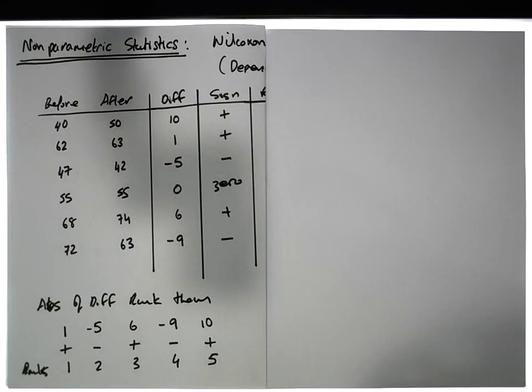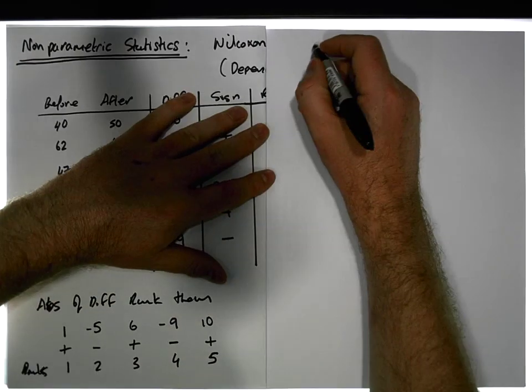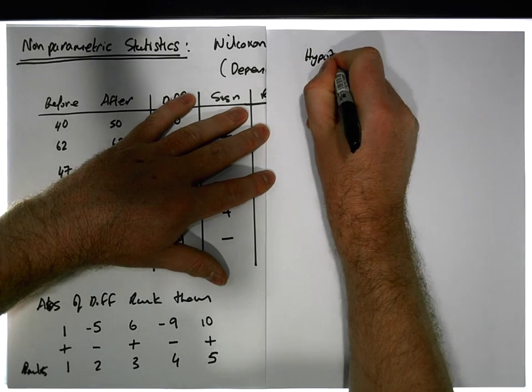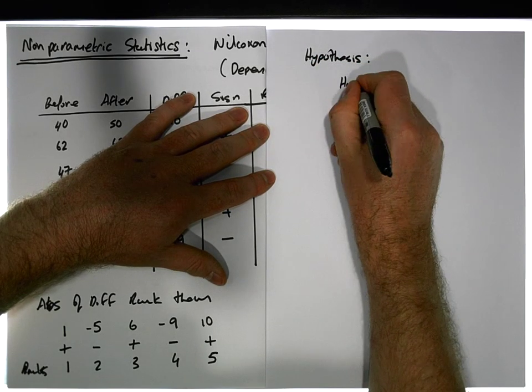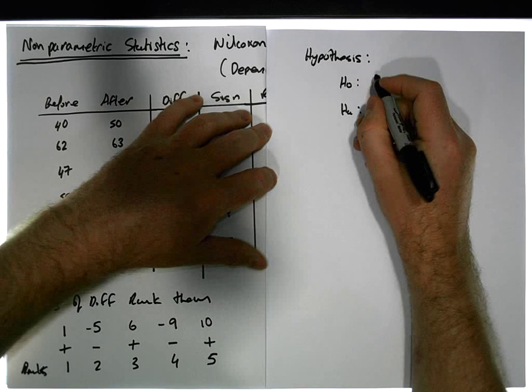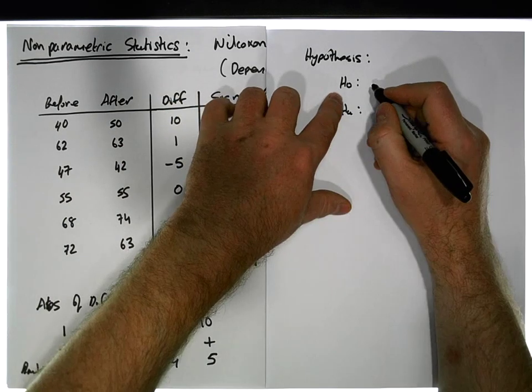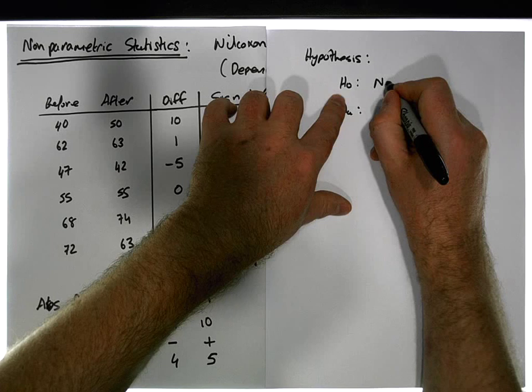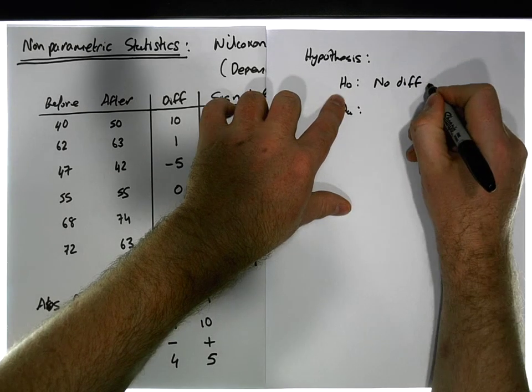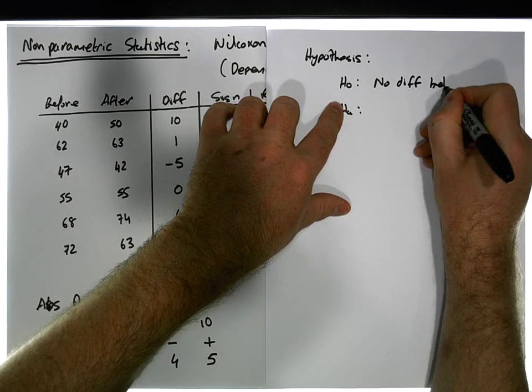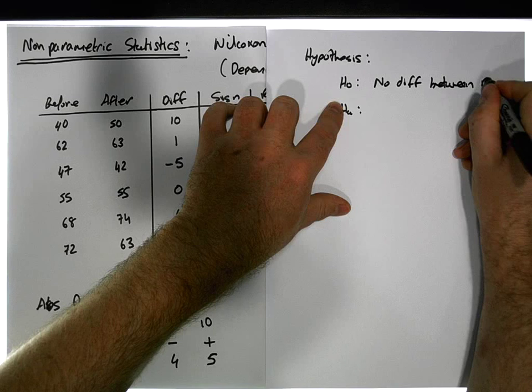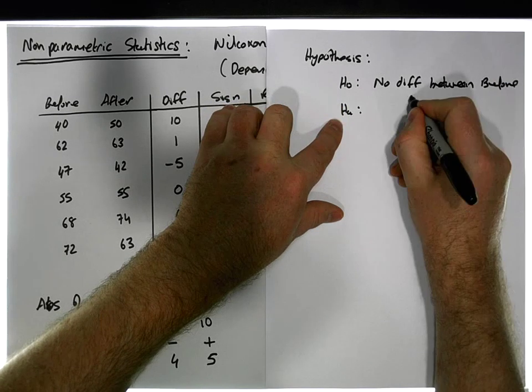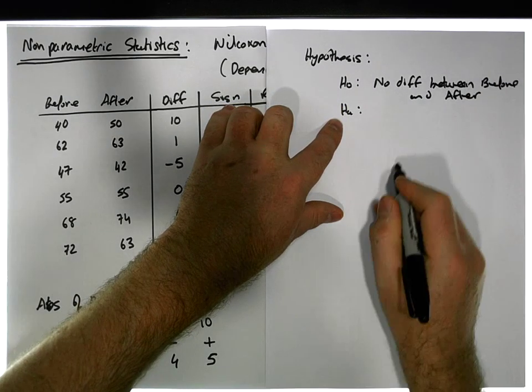Our hypothesis has a null position and has an alternative. Let me write down our five-step process. The null position is that there's no difference, there's been no change between before and after. The alternative is that there is a difference.